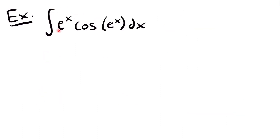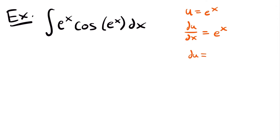For our next example, we have the integral of e to the power of x times cosine of e to the power of x times dx. Because we have a composite function — e to the power of x inside the cosine function — we're probably going to need to use u substitution. We know that e to the power of x is its own derivative. So we do have a function and its derivative in this integral. If we set u equal to e to the power of x, then du dx equals e to the power of x. Multiplying both sides by dx, du equals e to the power of x dx.